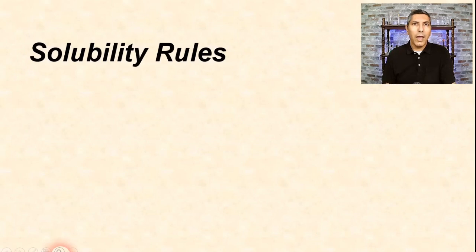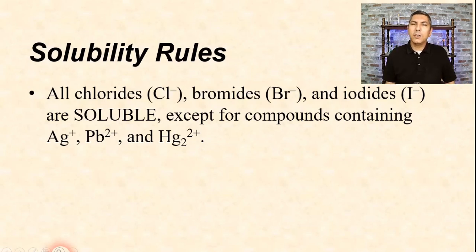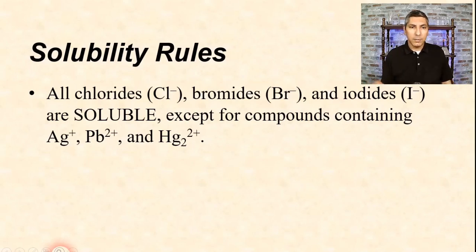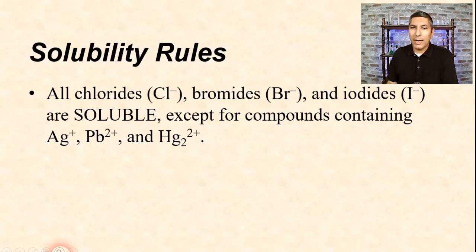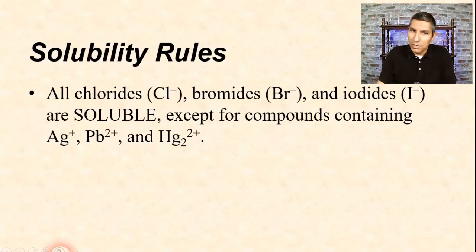These next rules do have some exceptions. Chlorides, bromides, and iodides are generally soluble. So if you see a compound that ends with Cl, Br, or I, it is generally going to dissolve in water. However, there are three exceptions: silver, lead, and mercury. So lead chloride, silver iodide, or mercury(I) bromide are not going to dissolve in water. But generally speaking, chlorides, bromides, and iodides do indeed dissolve in water.